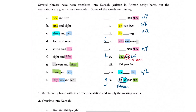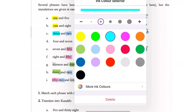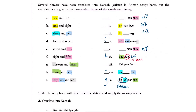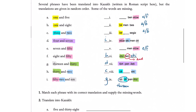Looking through what we've done so far, only d on the left-hand side hasn't been highlighted, and that can directly match to number seven on the right-hand side. From this we can figure out what 'seven' is.